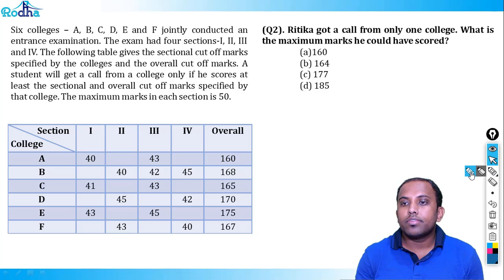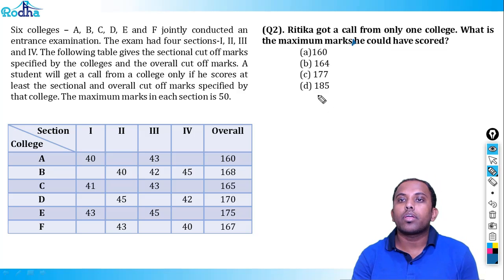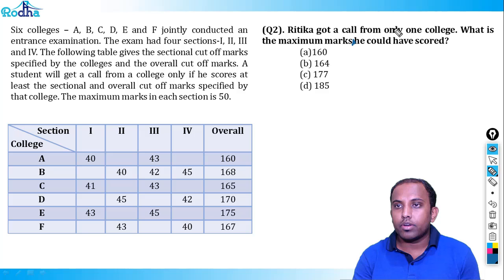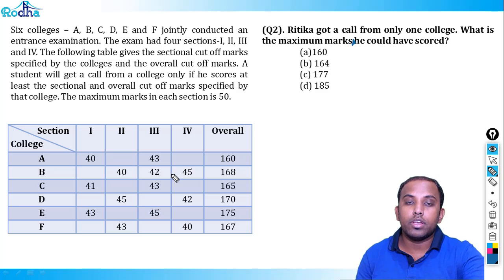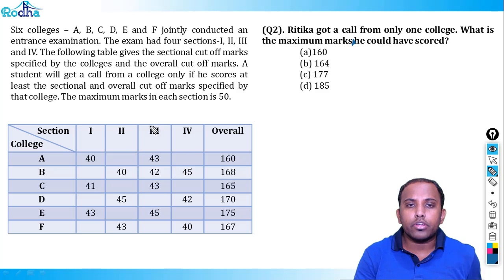Second question: Hrithika got a call from only one college. What is the maximum marks she could have scored? Again, I'll start with section 3 because it has the maximum data. If she scores 41 in section 3, she is straight away eliminated from colleges A, B, C, and E, since the minimum cutoff there is 42.